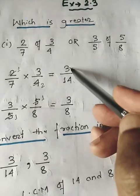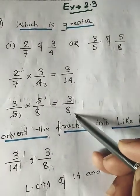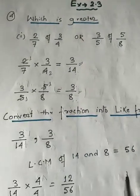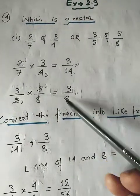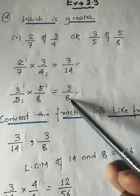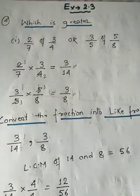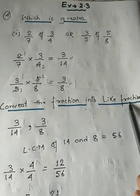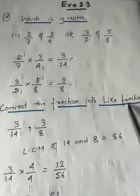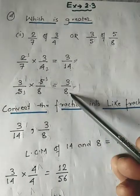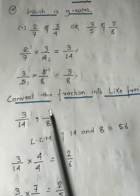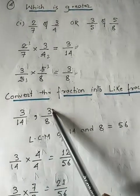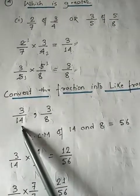So we are getting two fractions: 3/14 and 3/8. Now we have to compare these two fractions. We know that to compare fractions we need to make the denominators the same — that is, convert them into like fractions. Like fractions means converting the denominators to be similar. For that, find the LCM of the denominators 14 and 8.